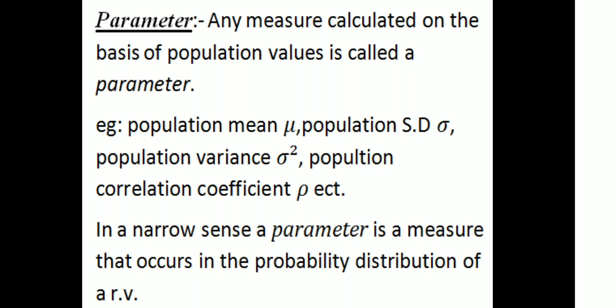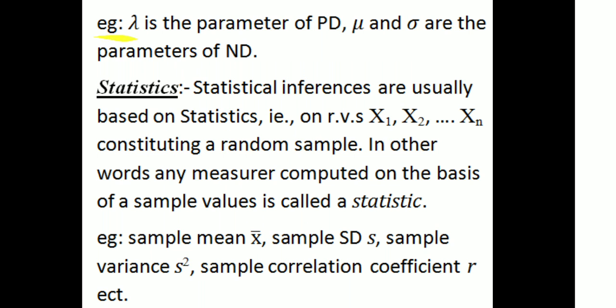We determine what the parameter is. Any measure calculated on the basis of population values is called a parameter. Examples: population mean mu, population standard deviation sigma, population variance sigma square, population correlation coefficient. In a narrow sense, a parameter is a measure that occurs in the probability distribution of a random variable. For example, lambda is a parameter of Poisson distribution; mu and sigma are parameters of normal distribution.